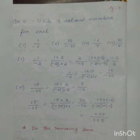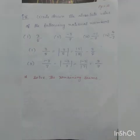Question number 5: Write down the absolute value of the following rational numbers. So what is absolute value? The numerical value, no negative sign, only the numerical values. So for 3 by 5, numerical value of 3 and numerical value of 5. The absolute value of 3 by 5 is 3 by 5 itself.